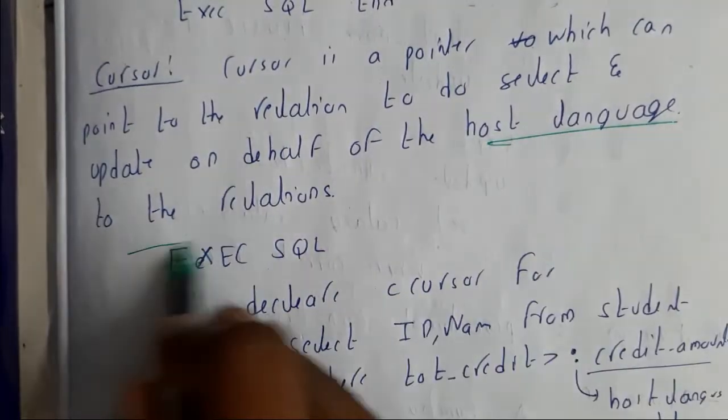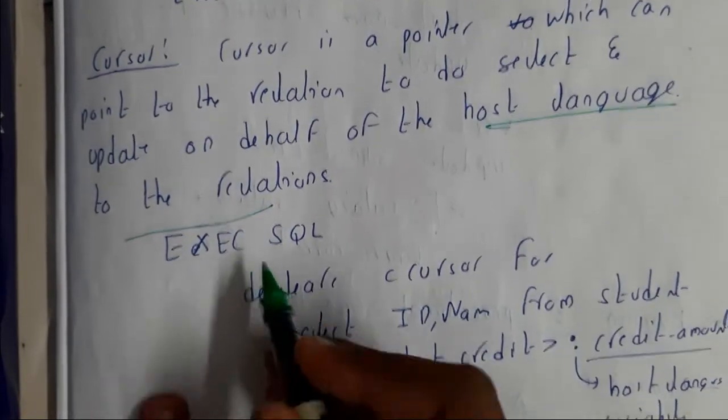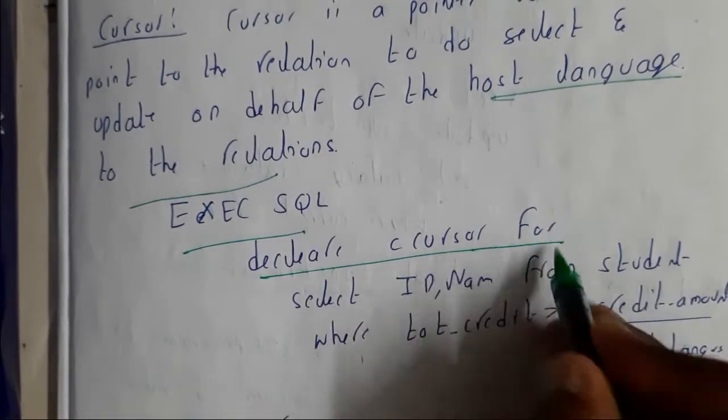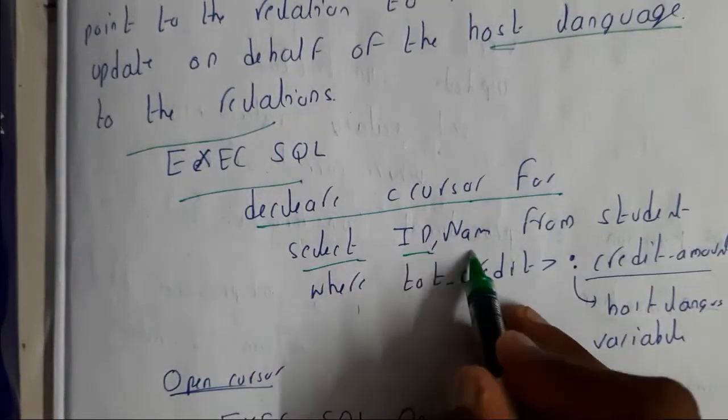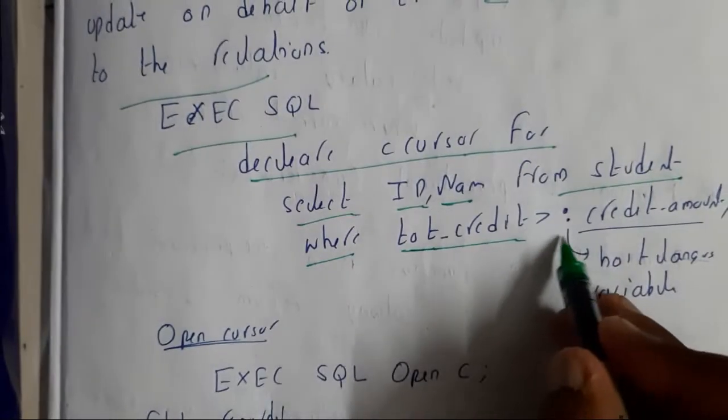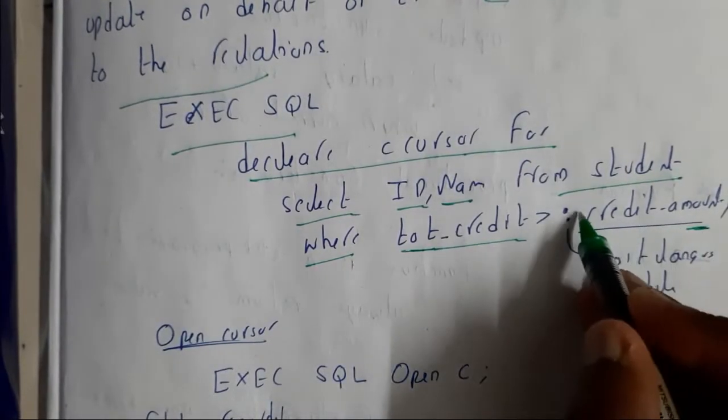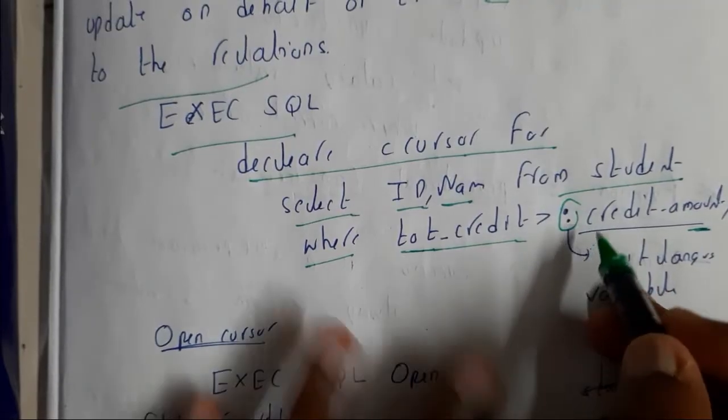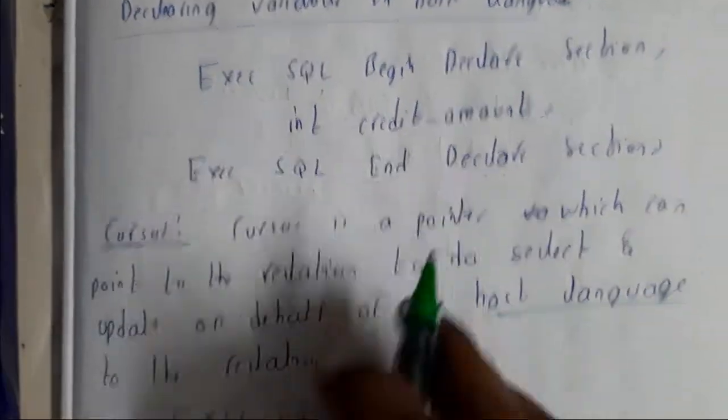Instead of the host language, we will be using these cursors. EXEC SQL DECLARE cursor FOR SELECT id, name FROM student WHERE tot_credit is greater than credit_amount. We will be using this colon because this is declared in our host language.